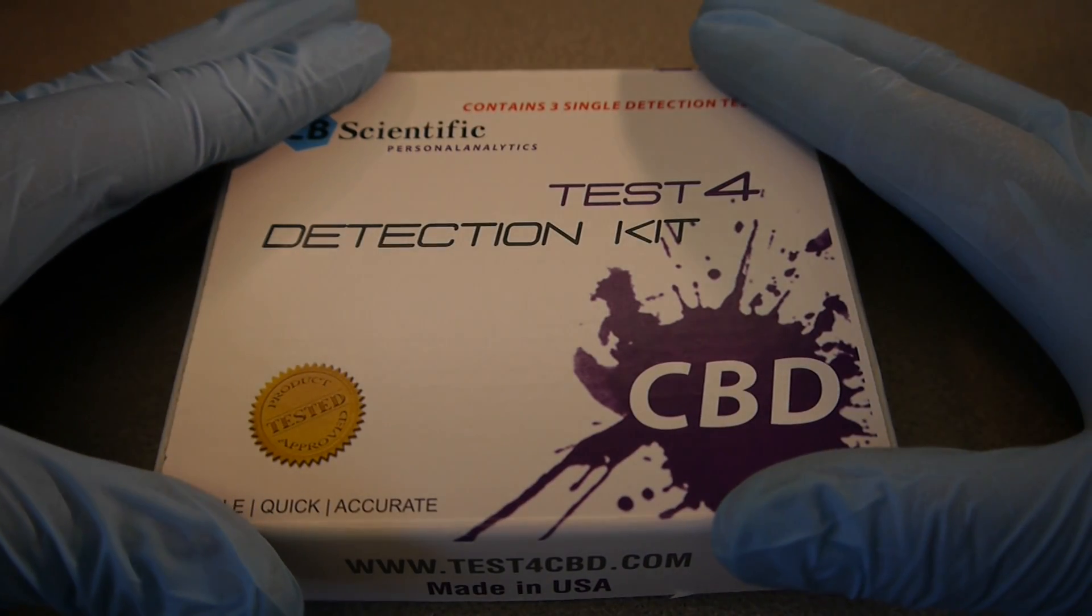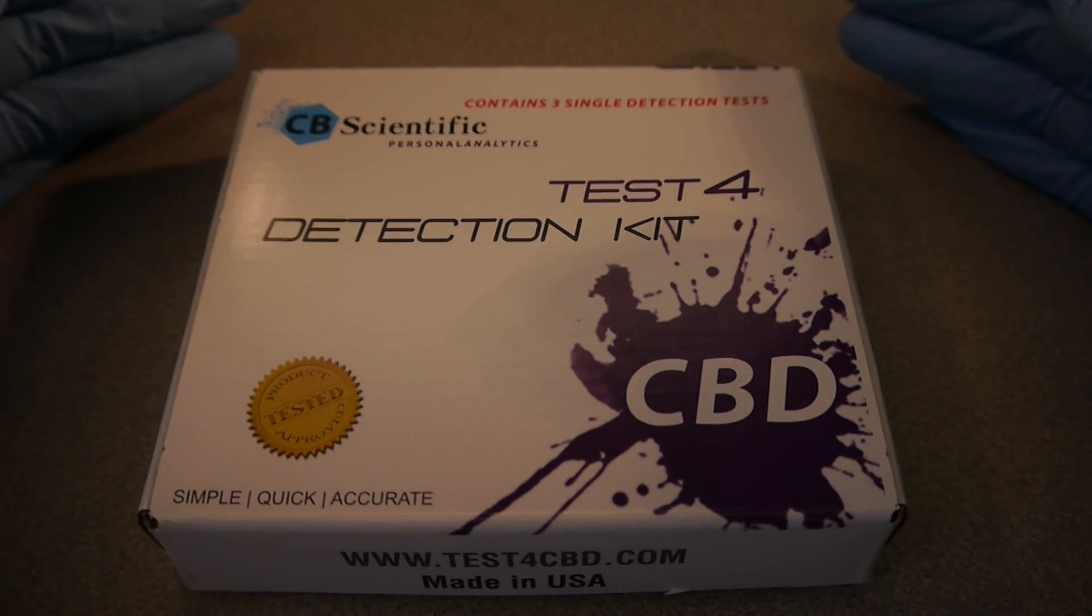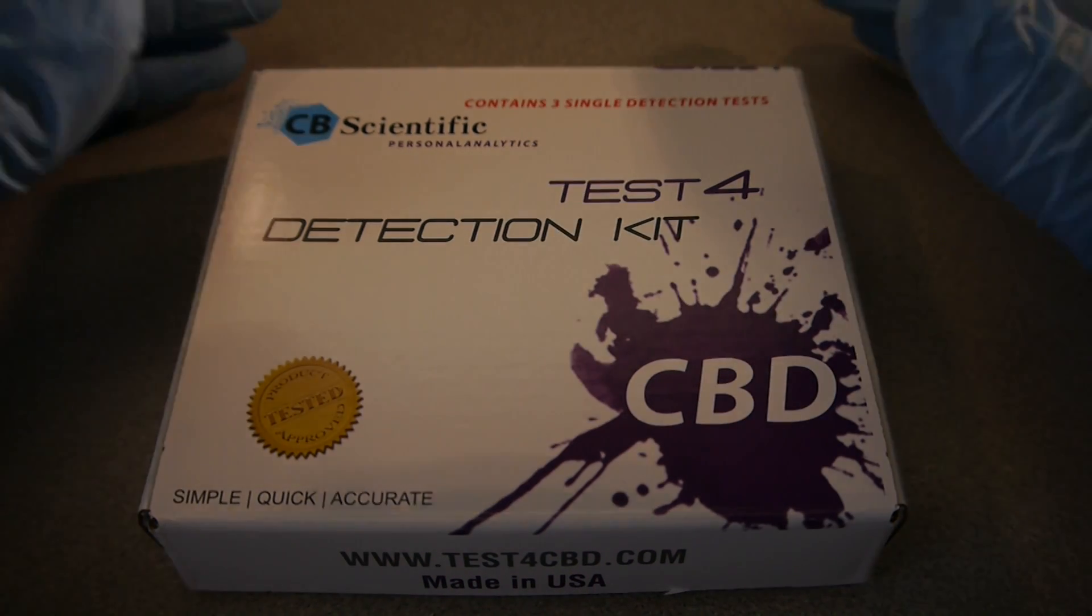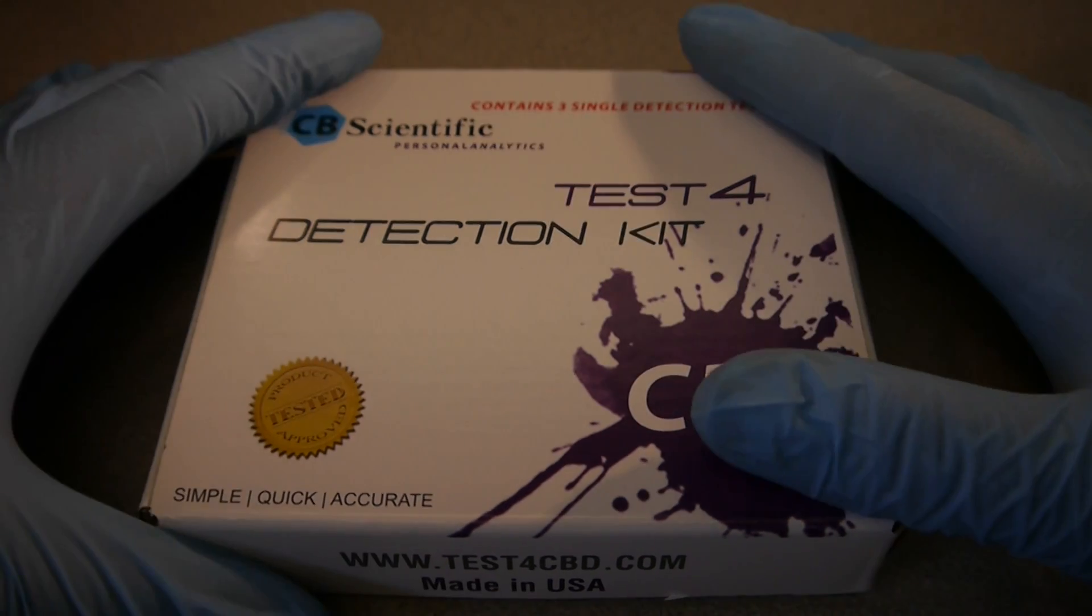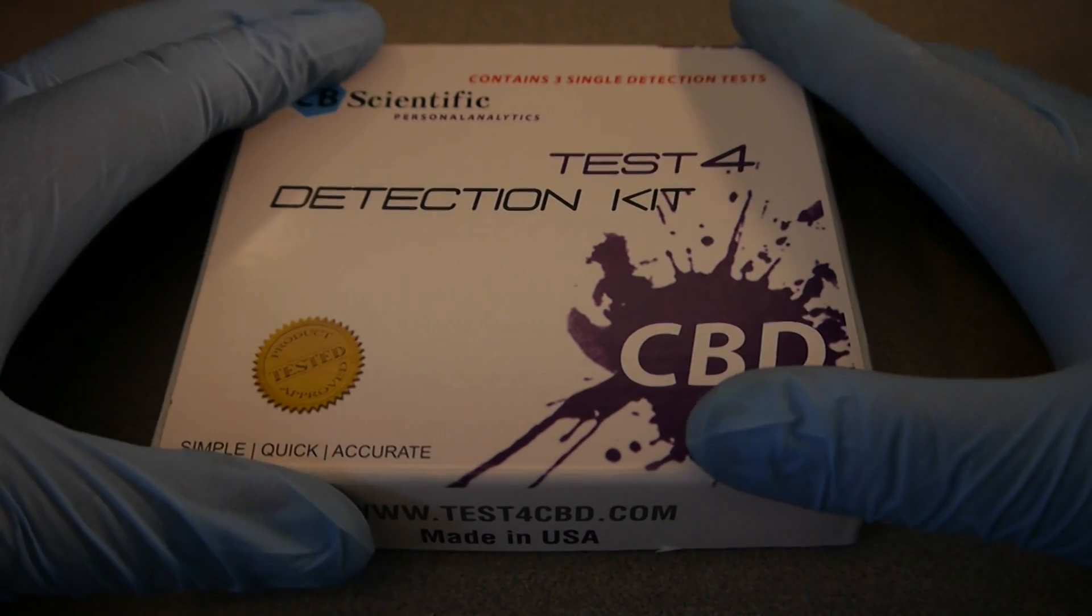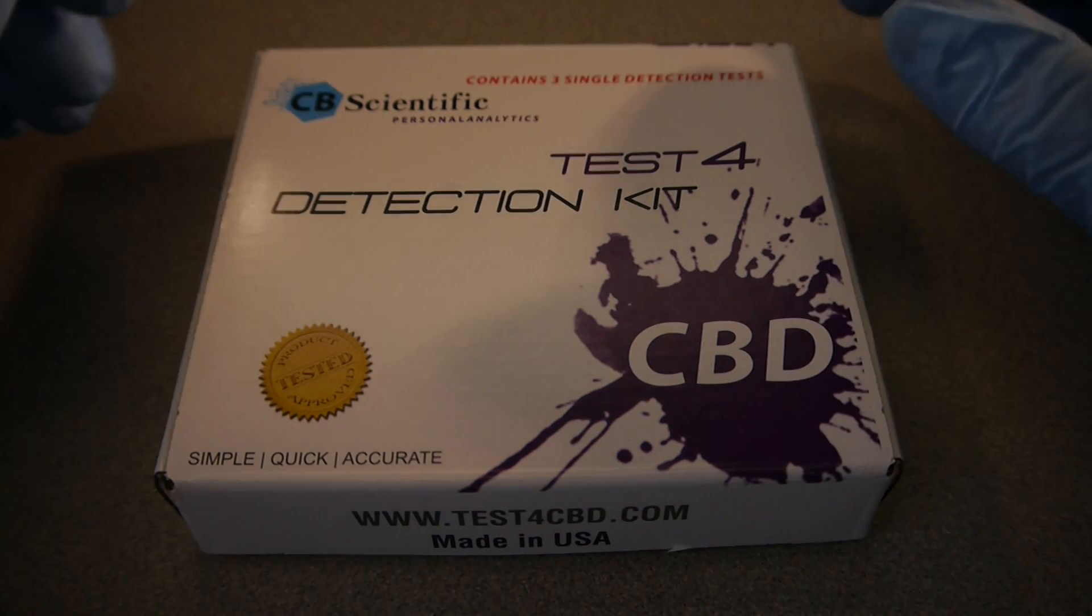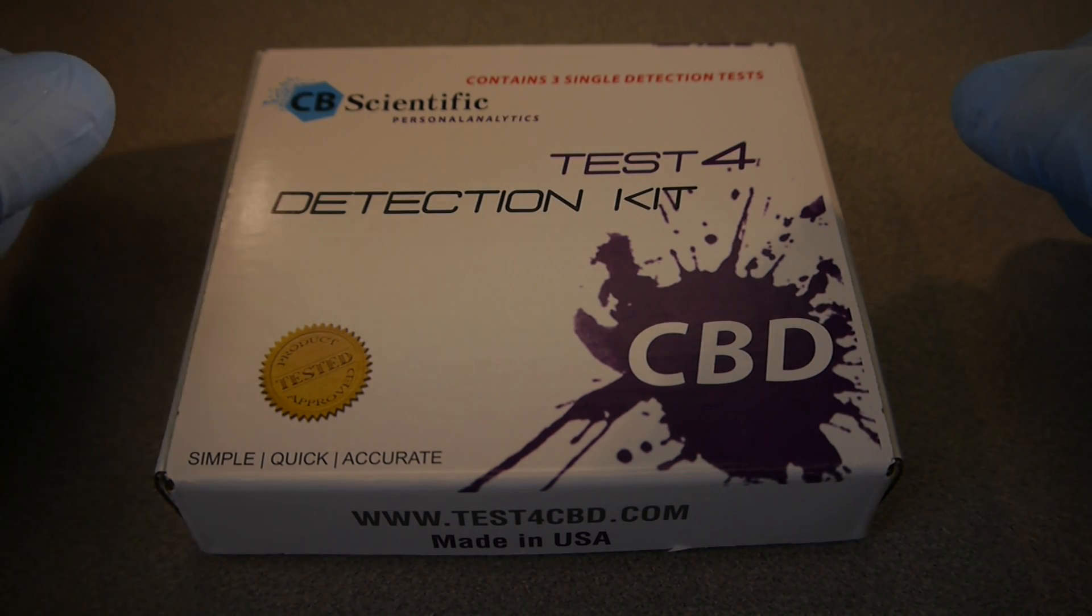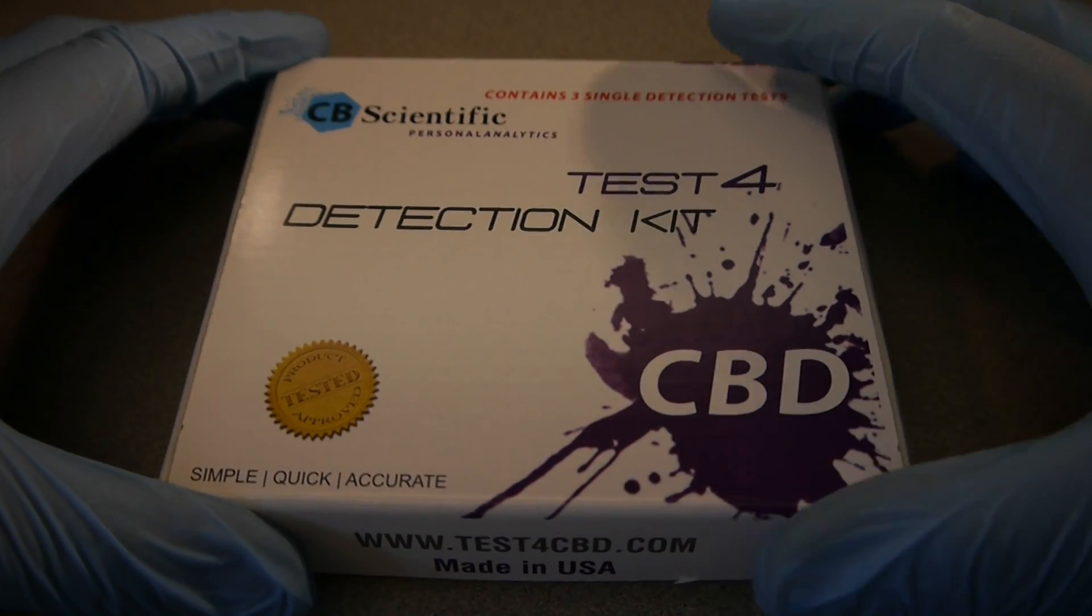We just recently released a video discussing that there are four new detection kits that just came out. It's actually the next generation. They're more intense, they're better at detecting, and they're a lot safer than the previous ones, which were also very safe. Let's get into it a little bit. This video is gonna discuss the contents of this box, what's inside here. It's gonna talk about how we perform a successful detection, and we're also gonna talk about how an unsuccessful detection works, and also what not to do with some of the ingredients. Let's get started.